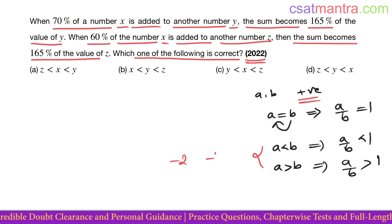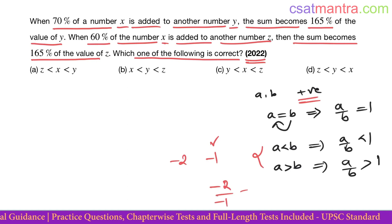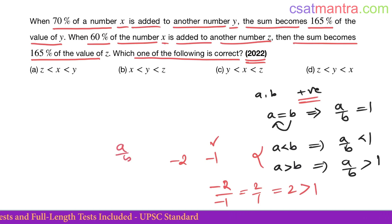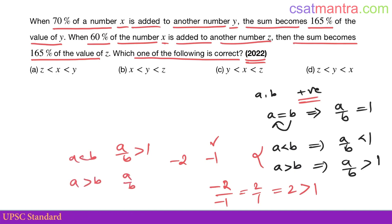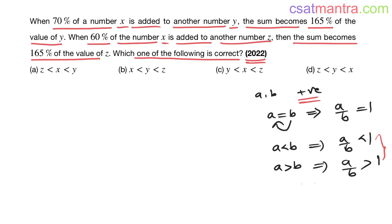For negative numbers, the opposite holds. For example, minus 2 is less than minus 1, but minus 2 divided by minus 1 equals 2, which is greater than 1. So when a and b are negative, a/b greater than 1 when a less than b — opposites hold. Without loss of generality, we will take x, y, and z as positive.